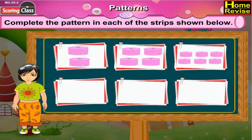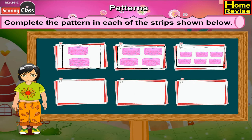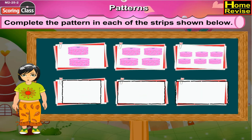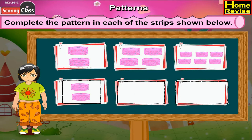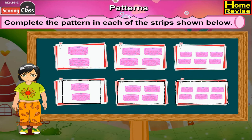Now the last pattern strip — they are filled with your favorite birthday cakes. In the first box there are two cakes, in the second four cakes, in the third six cakes. Now the next three boxes are empty. In the first box how many cakes will you draw? Yes, two. In the second box four cakes will come, and in the third box six cakes will come. All the pattern strips are filled.